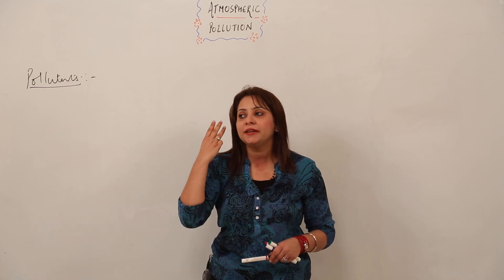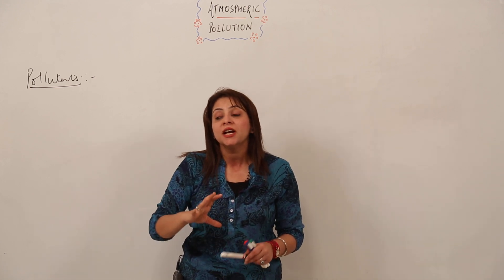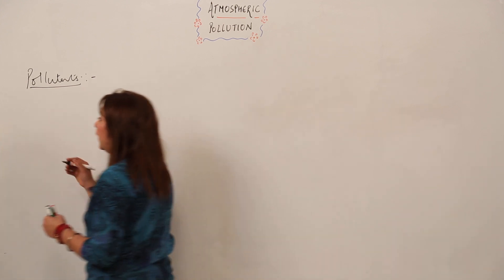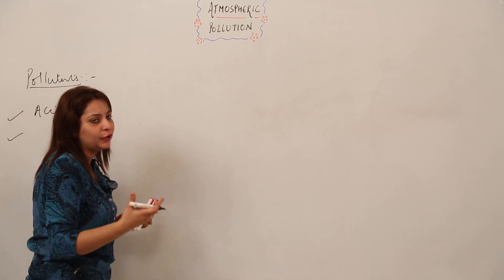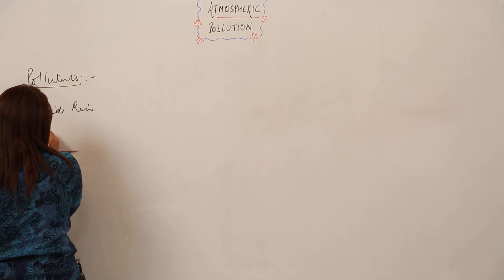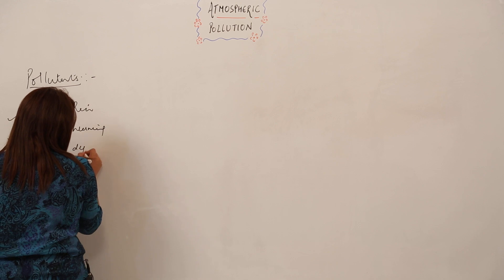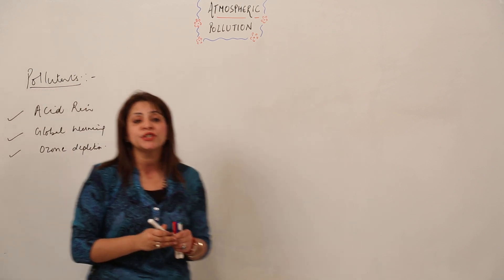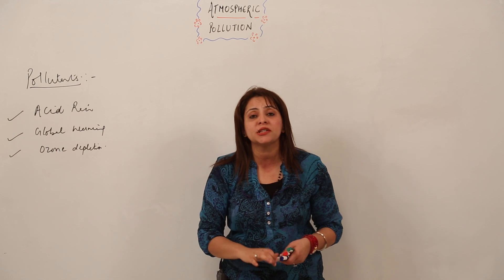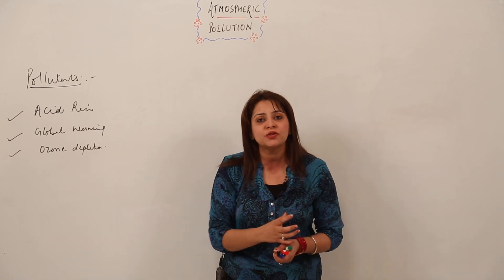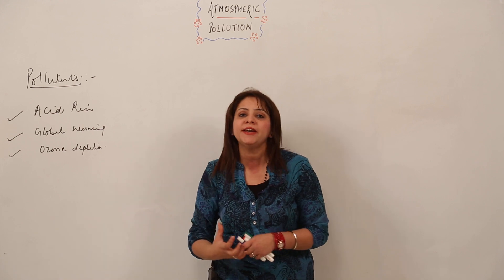There are three main causes leading to atmospheric pollution. These three phenomena are important because they cause adverse effects on the atmosphere. Those three phenomena are: acid rain — you may have heard this word before — global warming, and ozone depletion. These three are so important and so dangerous that they are affecting the atmosphere in a great manner.